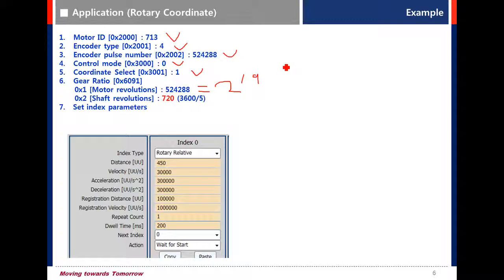Shaft revolution means the traveling distance of the load per rotation. Actually, one motor rotation is 3600 but set 720 for shaft revolution because of reduction gear 5 to 1.